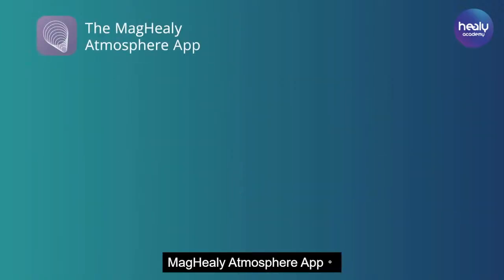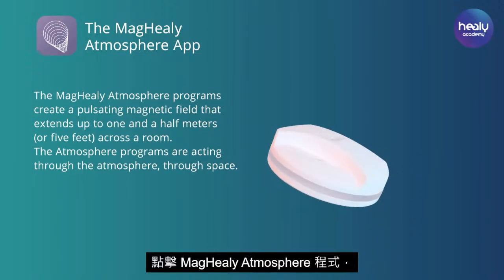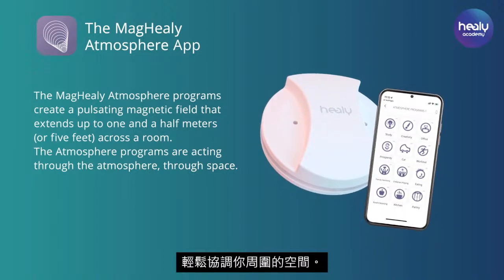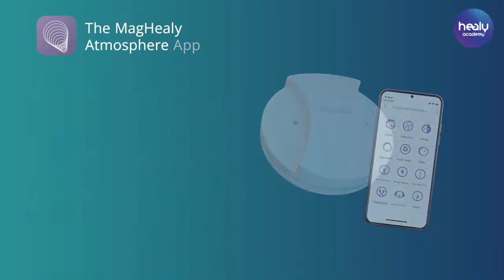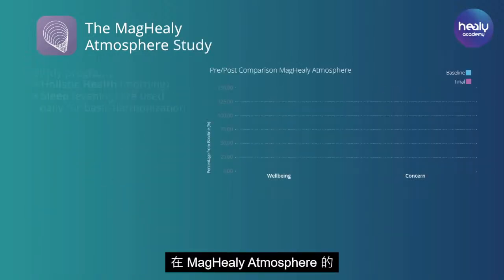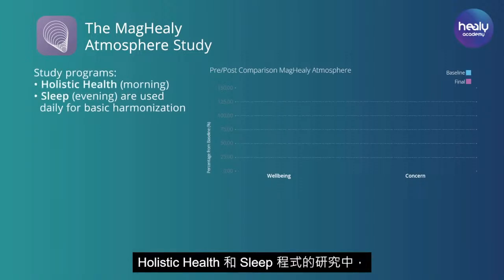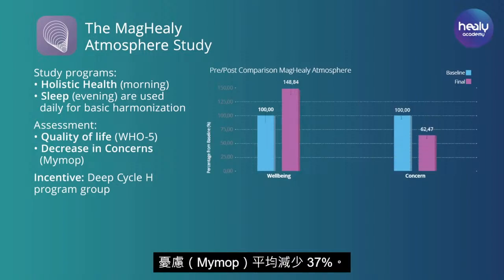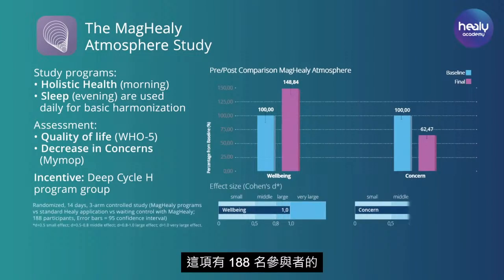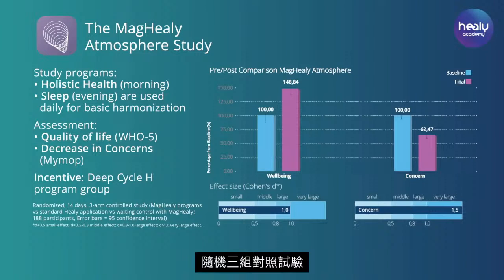Maghealy allows you to harmonize your surrounding space with a single click on your smartphone using the Maghealy Atmosphere programs. For this purpose, it generates frequency-modulated fields with a reach of up to 3 meters or 12 feet. In a study on the Maghealy Atmosphere program's Holistic Health and Sleep, participants showed an average 48% increase in well-being on the Quality of Life Assessment WHO-5 and an average 30% decrease in concerns (MIMOP). The effect size of this randomized 3-arm controlled trial with 188 participants was large for well-being and very large for decrease in concerns.